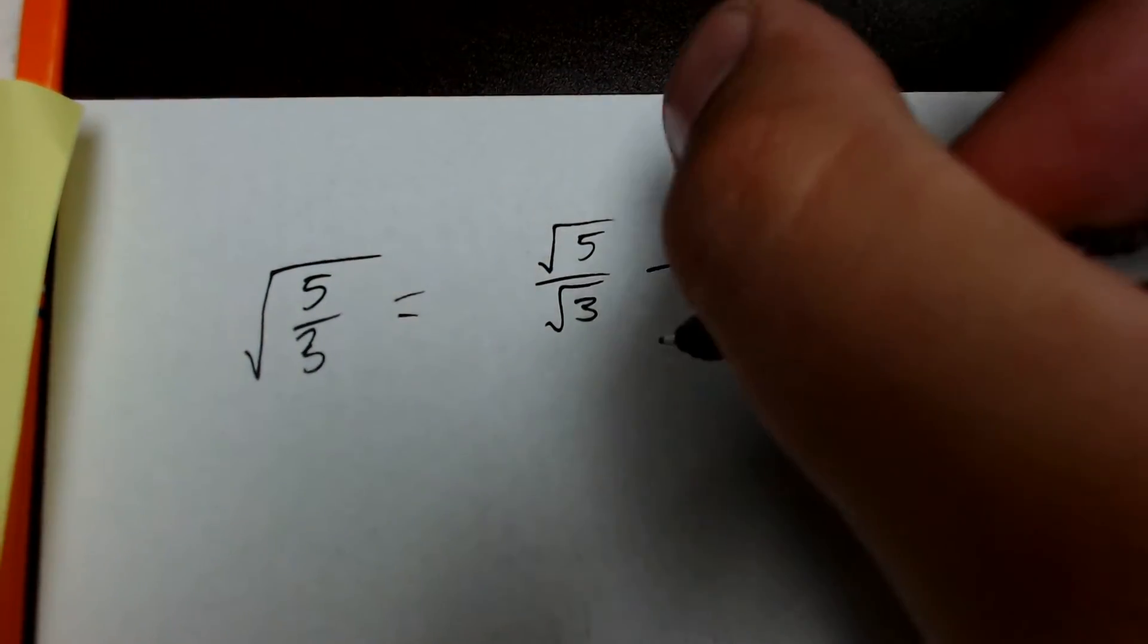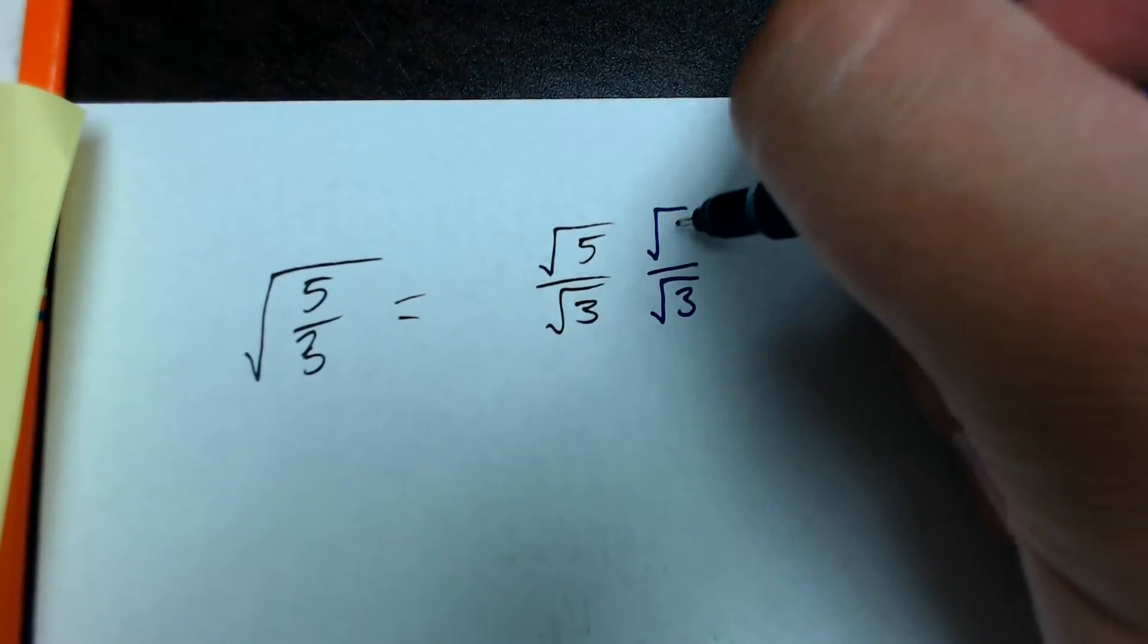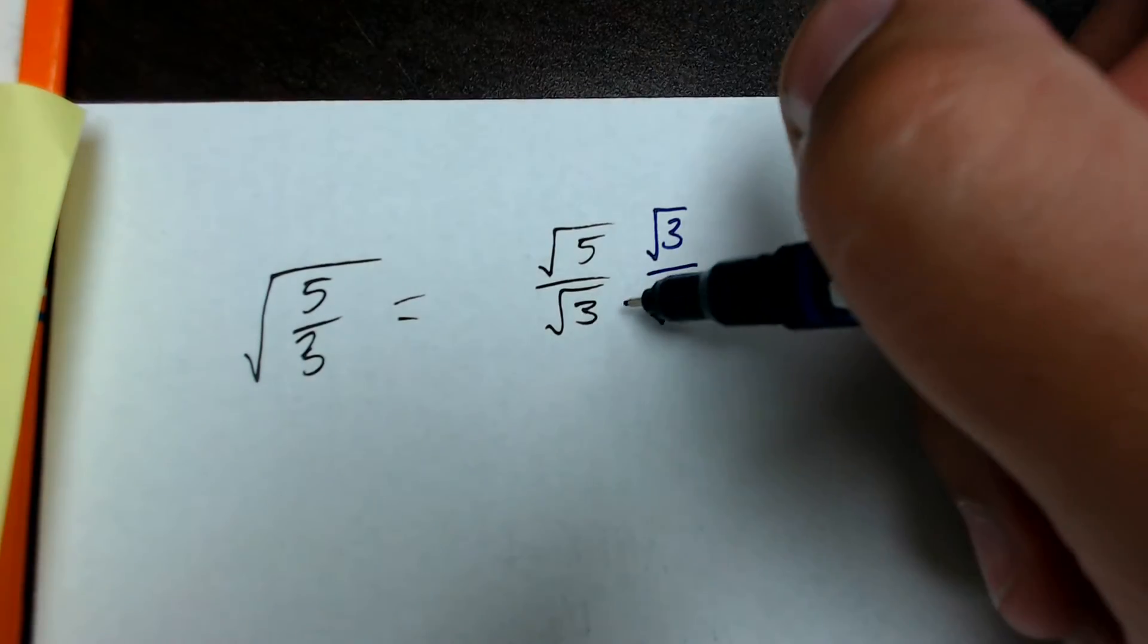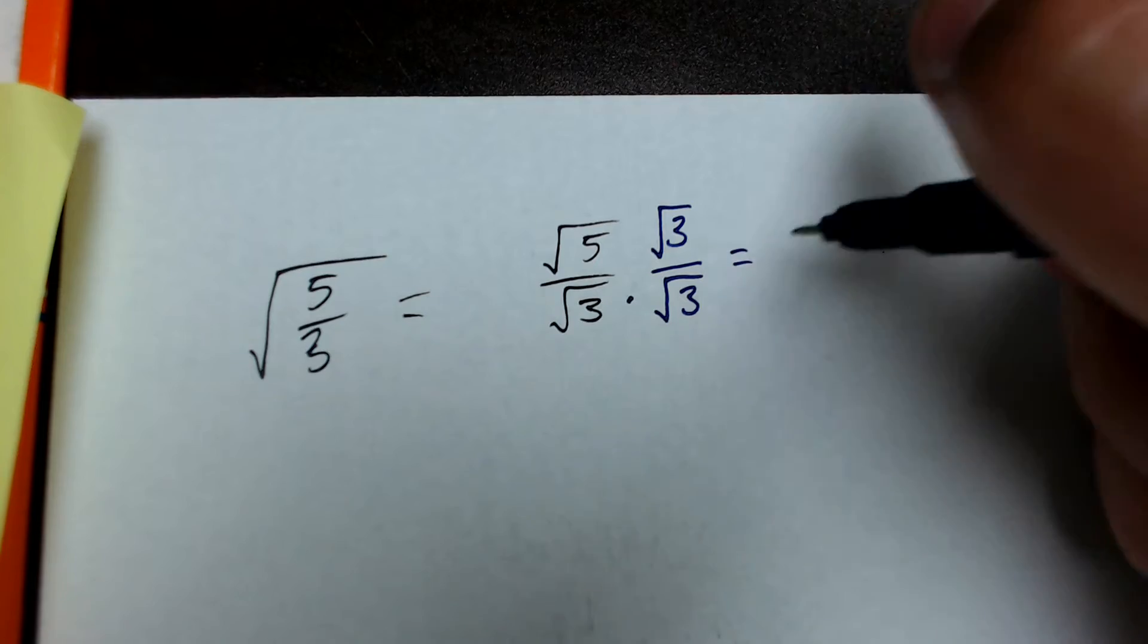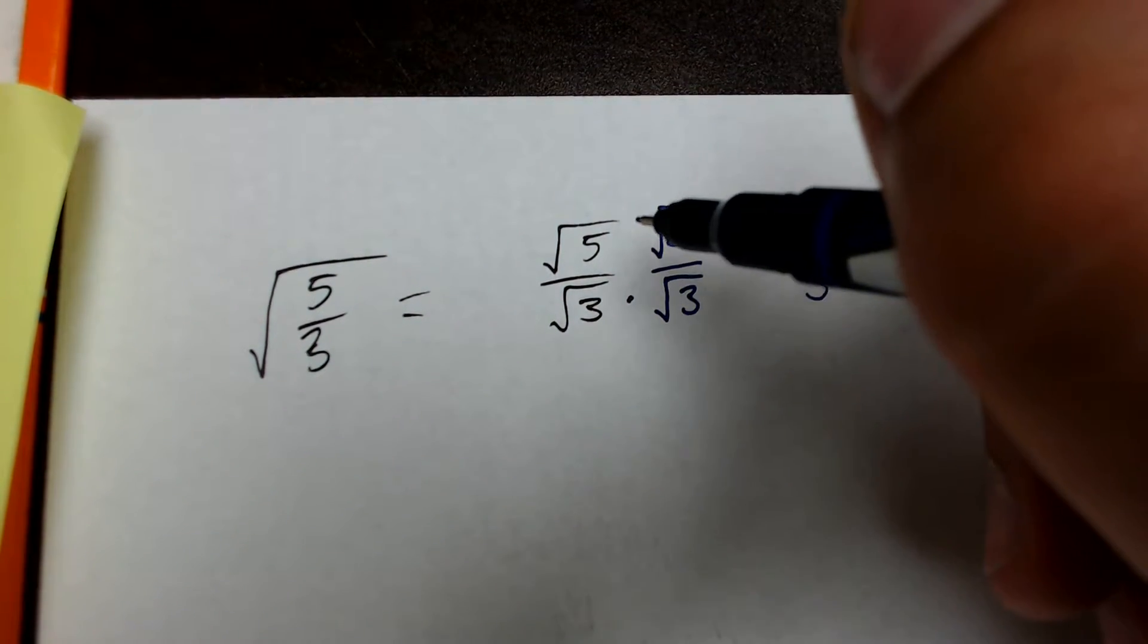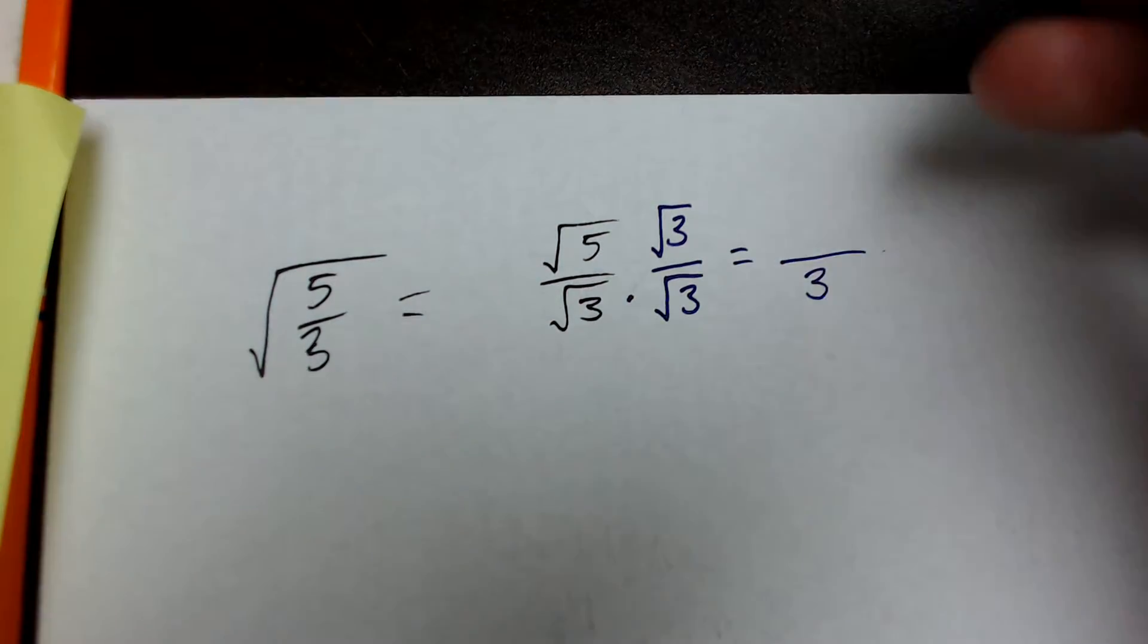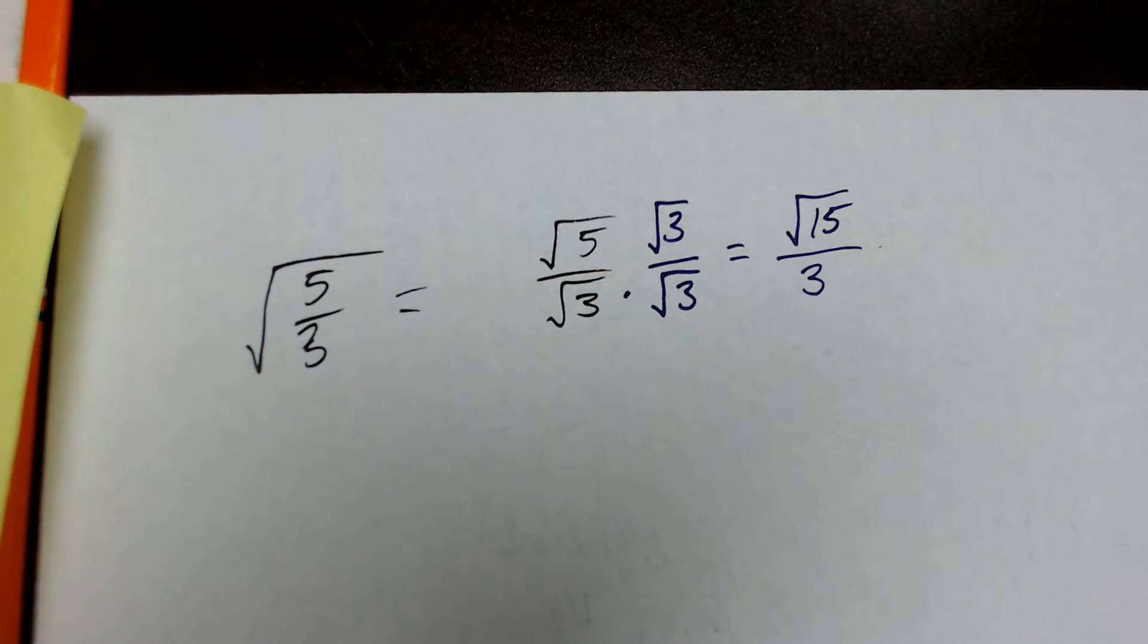So, if I take the square root of 3 times the square root of 3, and then I put that in the numerator, I now have the number 1, and then if I multiply root 3 times root 3, I actually just get the number 3. Then, I use my multiplication rule for square roots, and then I know that the square root of 5 times the square root of 3 equals the square root of 15.